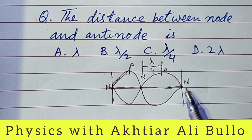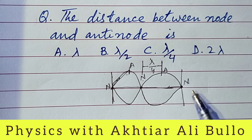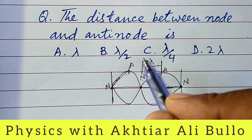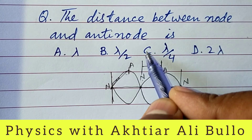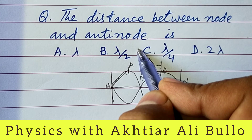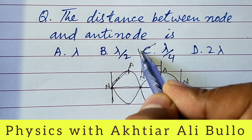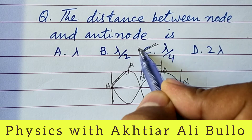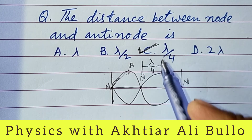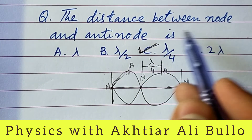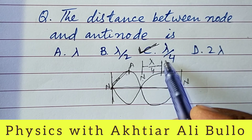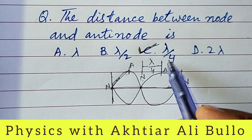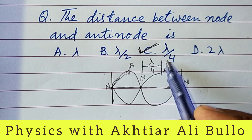So the correct option is (C) lambda upon 4, meaning the distance between a node and an antinode is equal to lambda upon 4.